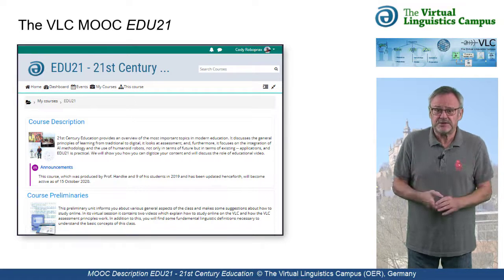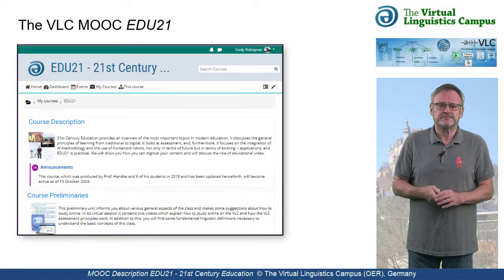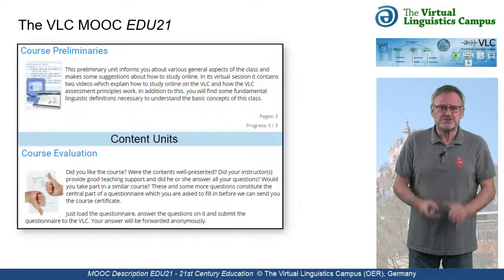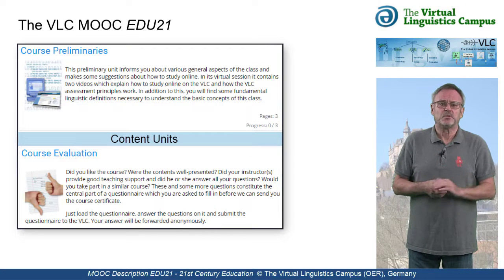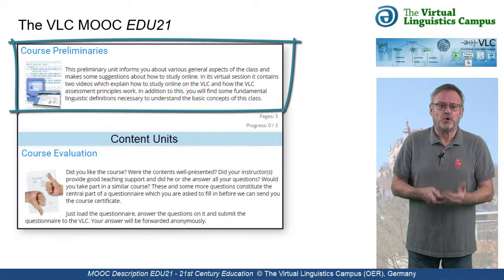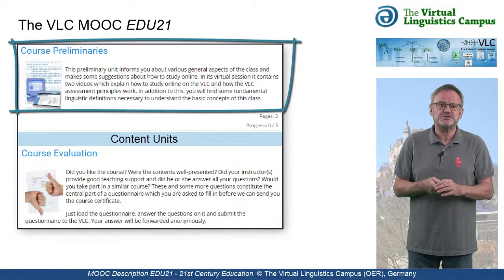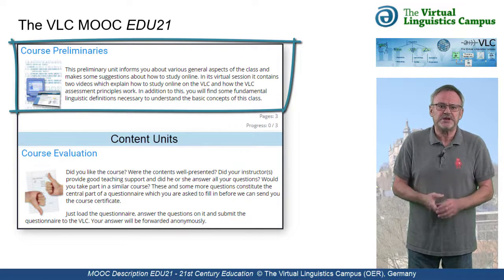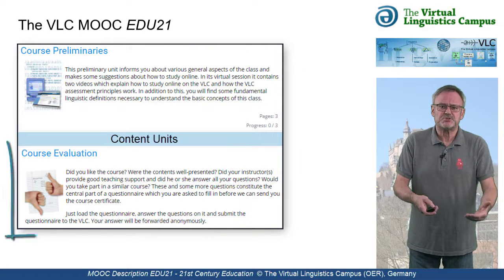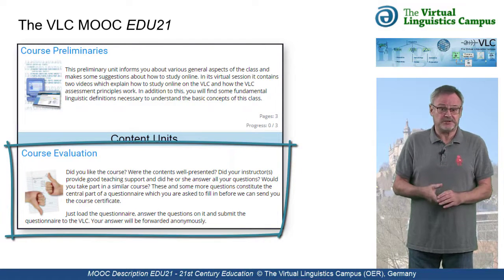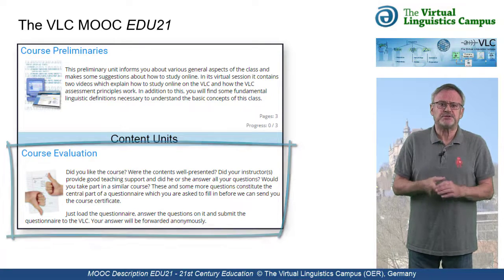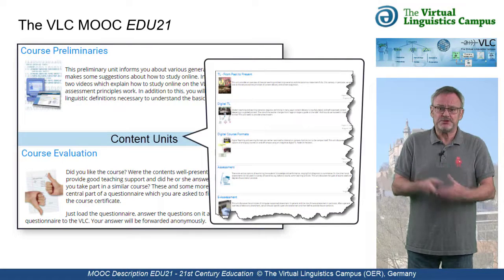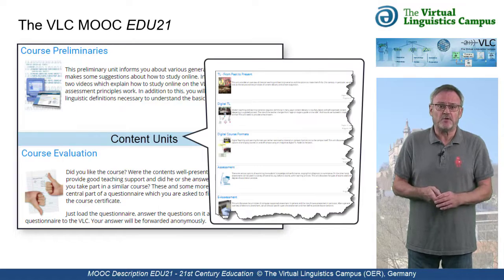Let us now look at the content of EDU21. The class consists of 13 units where the first one, the course preliminaries, informs you about some general aspects of the course and discusses what it means to study online using our MOOCs. The last one is your option to evaluate the course. The remaining units exhibit the content of this course, which is subdivided into four parts.